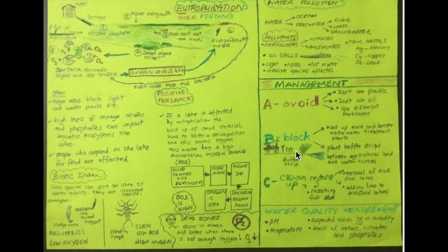The second tier in the management approach is the B, or the block method. In the case of eutrophication, it would be the planting of buffer strips, as you can see in this diagram, that would prevent the runoff of fertilizers into aquatic systems. Finally, the third tier is the cleanup approach. That would mean you would dredge lakes, restock them with plants, or add lime to lakes that might have been acidified in the case of acid rain.